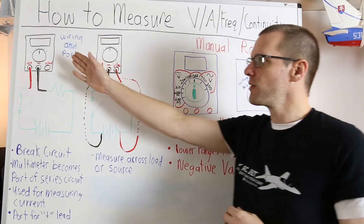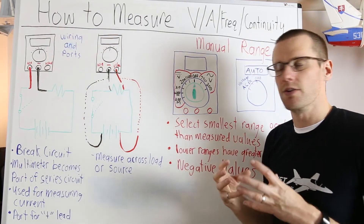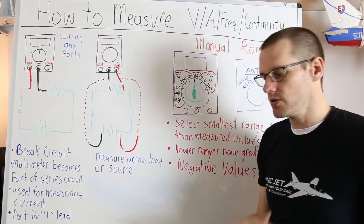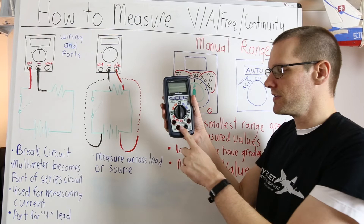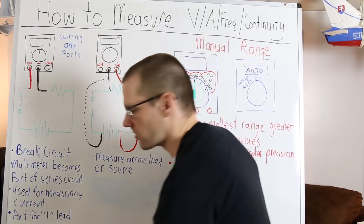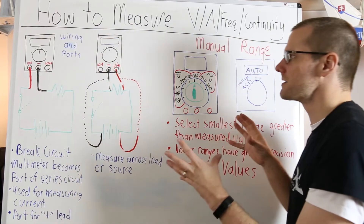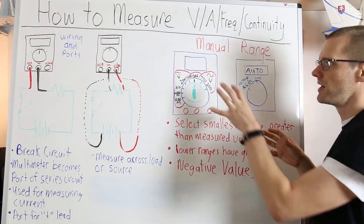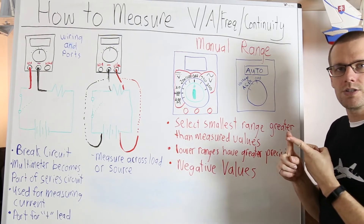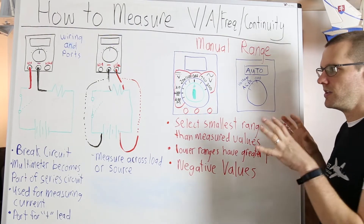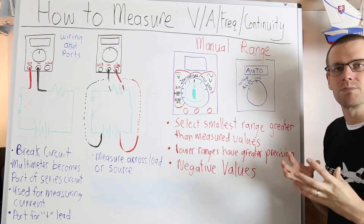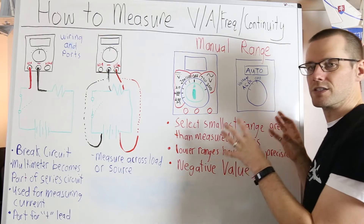On the left-hand side of our board we're going to be looking at how we actually wire our multimeter into our circuit and also what ports on our multimeter we use. Some multimeters have a ton of different ports and depending on what you are measuring you have to select the correct port. On the right-hand side of our whiteboard we're going to be talking about settings. Some multimeters are auto ranging and some are manual ranging, and on a manual you need to select the correct settings to maximize your precision.